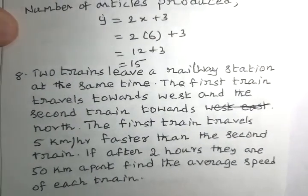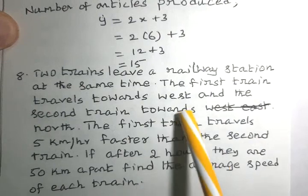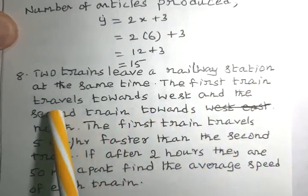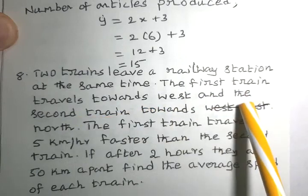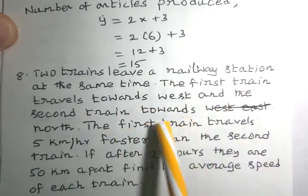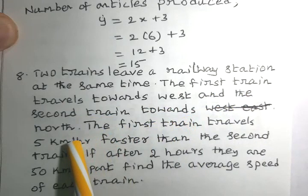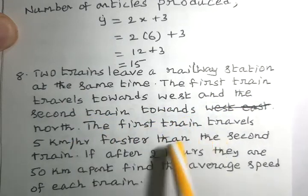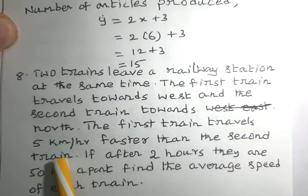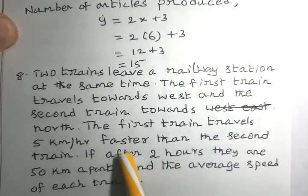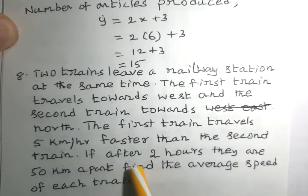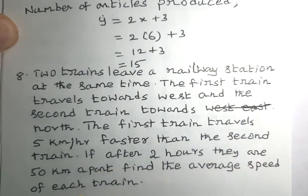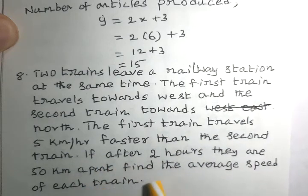Now we consider another problem. Two trains leave a railway station at the same time. The first train travels towards the west and the second train towards the north. The first train travels at 5 km per hour faster than the second train. If after 2 hours they are 50 km apart, find the average speed of each train.